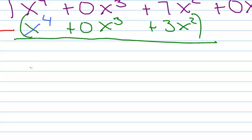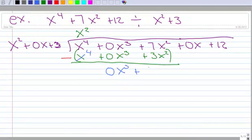x to the fourth minus x to the fourth. Those have disappeared. 0x cubed minus 0x cubed is 0x cubed. 7 minus 3, so that's going to be a 4. So, I have 4x squared. And let's write that a little bit better right there.